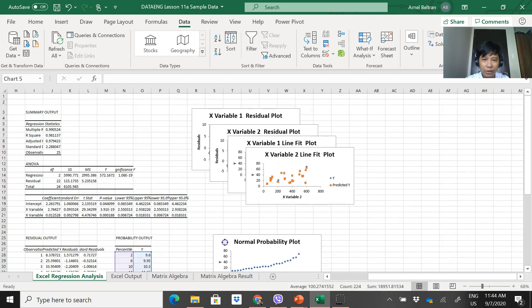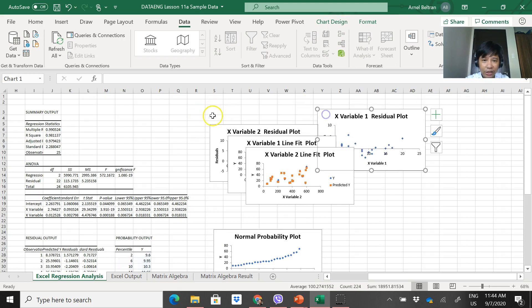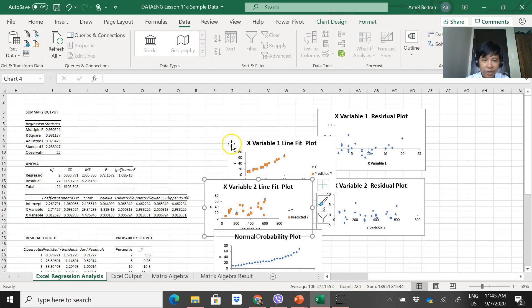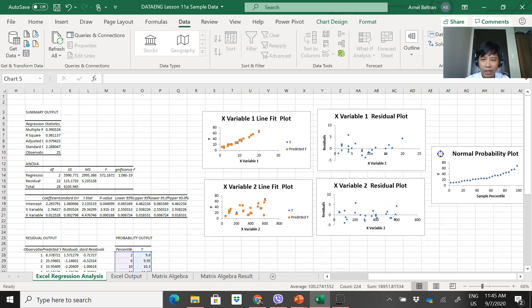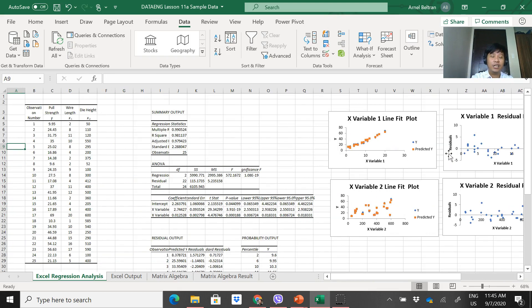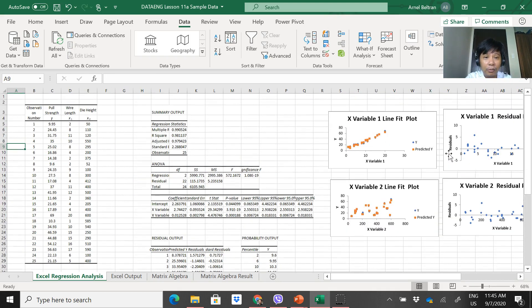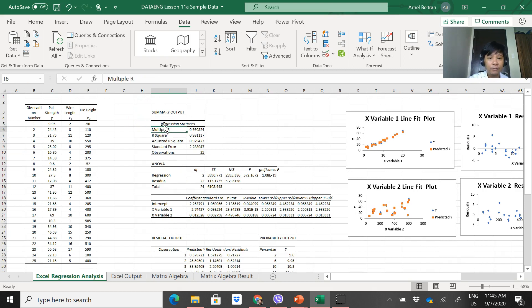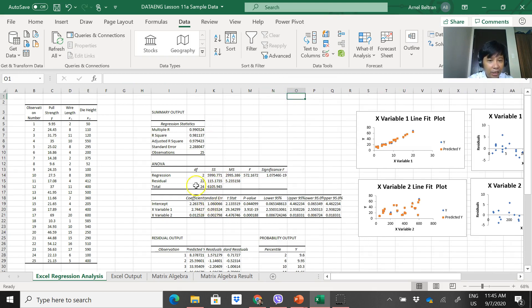So this is the residual plot, variable 1 residual plot, variable 2 here, variable 3 there, and the normal probability plot. Later, we will study what the content of these are. But basically, you will read there what the information is. You have the multiple regression, multiple R, R square, adjusted R square, standard error. This is the data, and observation 25. We have the ANOVA table, we have the degrees of freedom here, the sum of squares, the mean of squares. This one is the F table, and this is the significant F value. Later we will study this.